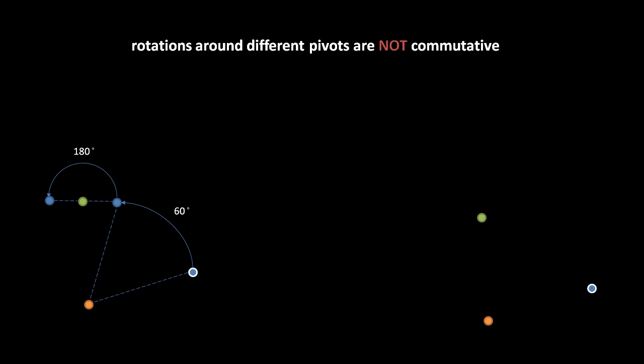If we start with the same starting point and pivot points, but reverse the order of rotations, rotating first 180 degrees around green, then 60 degrees around orange, the blue dot ends up in a totally different place, way off to the left and further down.